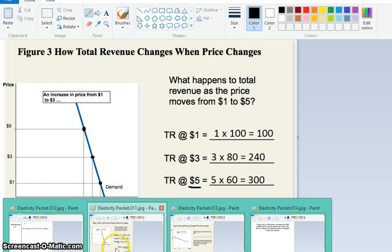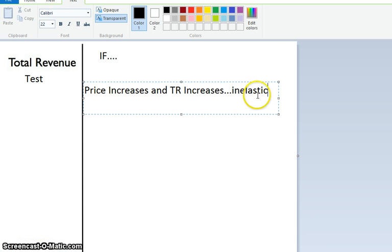So it could be said one of two ways. Price increases and total revenue increases: inelastic. Or if your price decreases and TR decreases, it's inelastic as well.